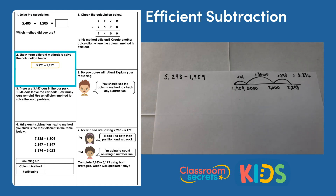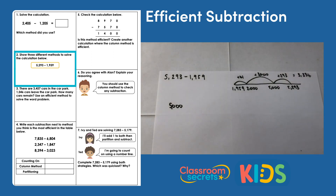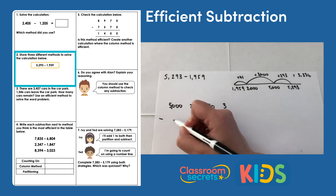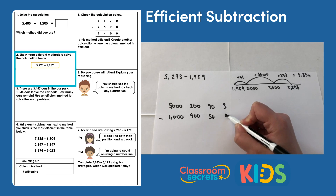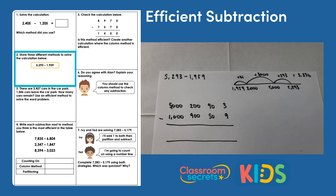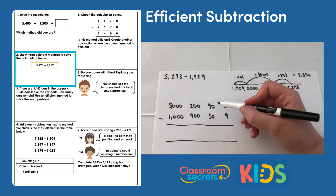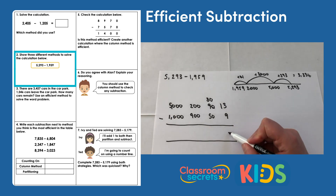Another way is partitioning using an expanded column subtraction. I show each number split into thousands, hundreds, tens, and ones: 5,293 subtract 1,959. Starting with our ones column, three take away nine we can't do, so we exchange a ten, reducing the tens to eighty but giving us thirteen ones. Thirteen take away nine is four.